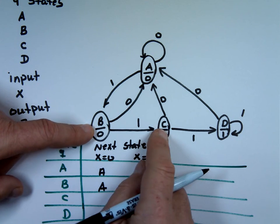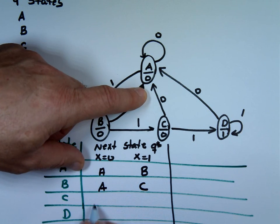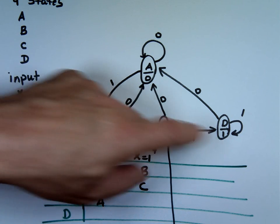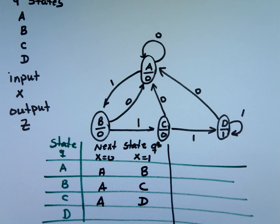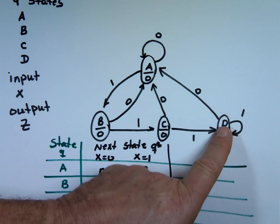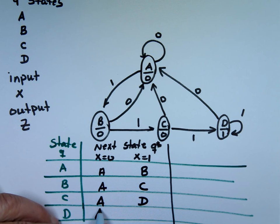If you're state C and your X is 0, you go to A. If it's 1, you go to D. And if you're state D and your input is 0, you go to A. But if it's 1, you stay at D.